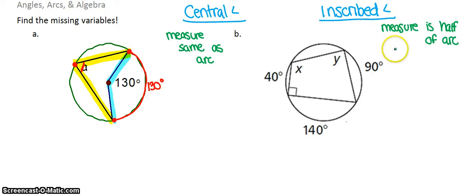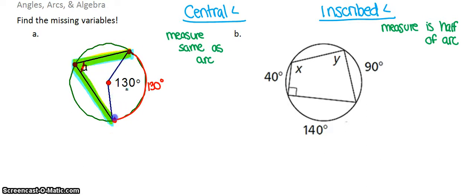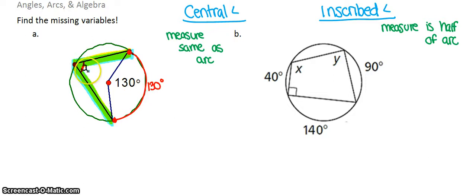The inscribed angle is half of its intercepted arc. So if the inscribed angle here shares the same endpoints, its intercepted arc is also 130°. The inscribed angle measure is half of 130°, which gives us 65°. That's how you solve a problem about central and inscribed angles.